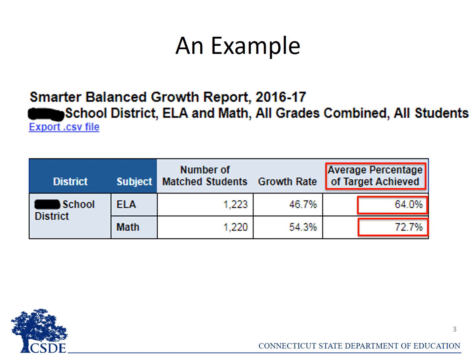To summarize, in this district, more students are meeting their targets in math than in ELA. More than half of the students — 54.3 percent — are meeting their math growth targets, but in ELA it's less than half: 46.7 percent. Similarly, on average, students are achieving a greater percentage of their growth targets in mathematics as compared to ELA.